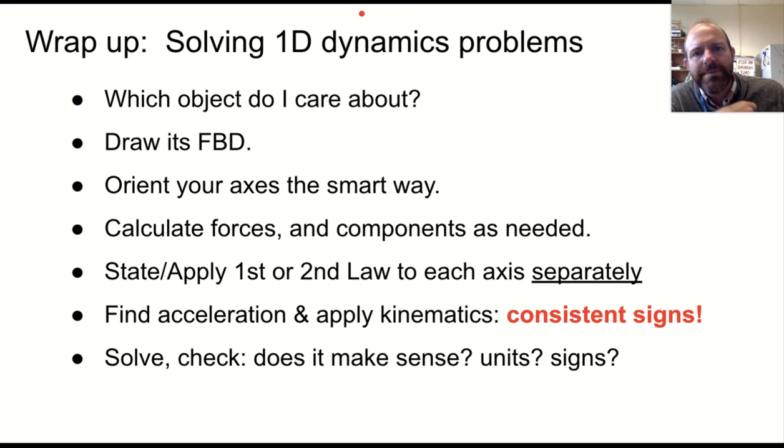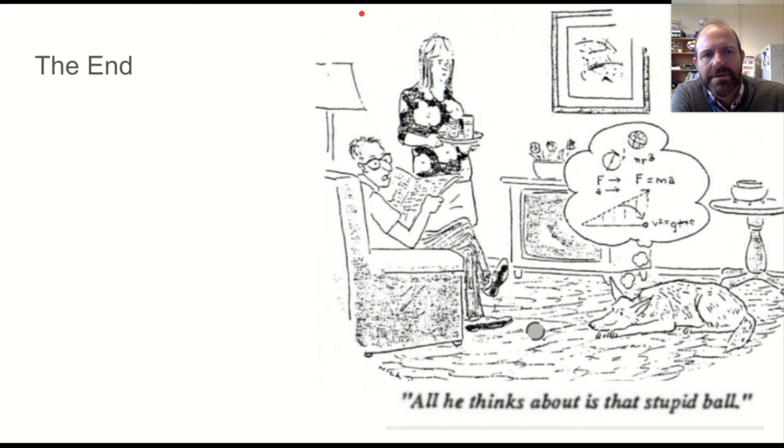So when we're solving one-dimensional dynamics problems, these are still actually one-dimensional, even though it's technically two dimensions. If you orient your axis the right way, you can often get a single dimension for each law, which is really what we want. It causes everything to be much simpler. Draw the free body diagrams. Calculate forces and components. State and apply your various laws and the two axes separately, X and Y. Find acceleration and apply kinematics. Be careful about your signs, what's positive, what's negative. But do that as needed. And then double-check. Does everything make sense? So that's the end of this video. If you go and look at the slides that this came from, there's a couple more example problems in there that you can look at as well. Good luck. Thanks for watching.